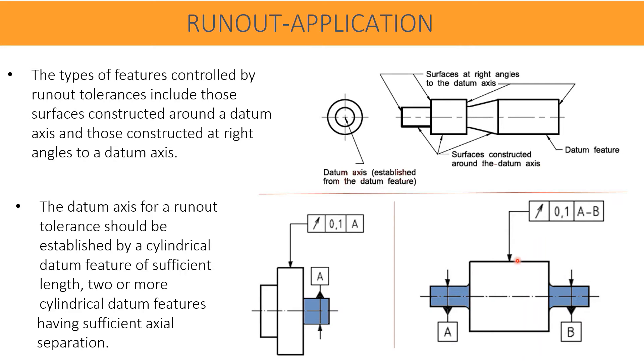Either one datum or two datums that are separated apart with good separation between them, as shown here with datum A and datum B. The common axis created between datum A and datum B is called common datum A-B. With respect to that end-to-end cylinder axis, the control tolerance of runout is specified as 0.1 mm.